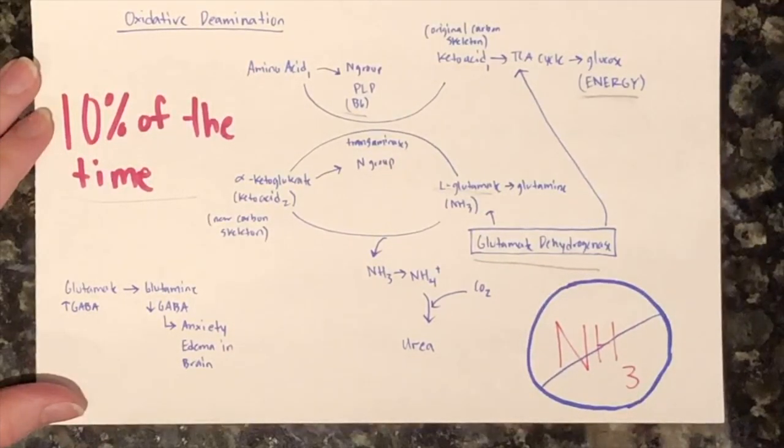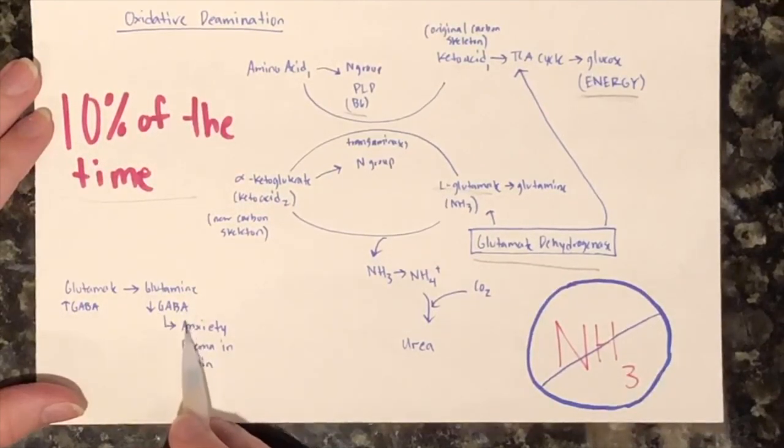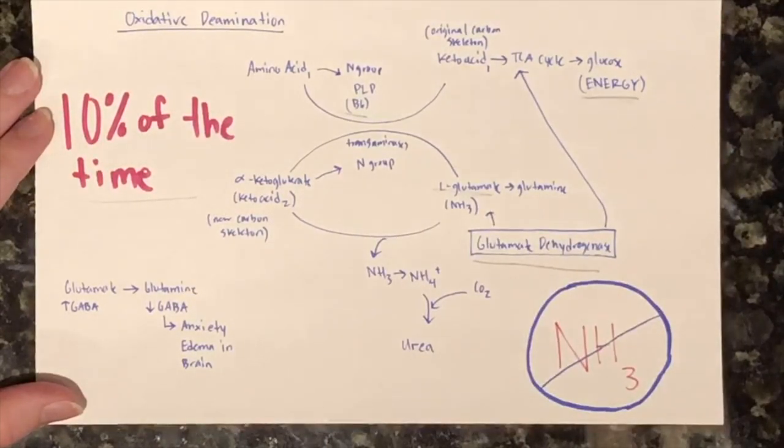This conversion suppresses GABA, an inhibitory neurotransmitter that has calming effects on the body. This repression can lead to anxiety. The enzyme glutamate dehydrogenase also converts glutamate into ammonia.